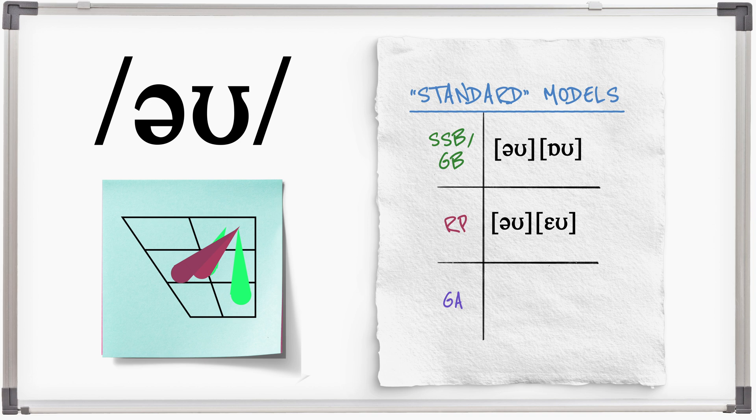In general American, O has a mid-back rounded starting point. O, don't go. With no change before L, sold, gold.